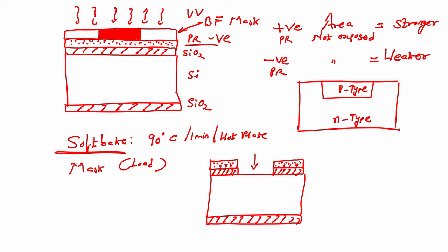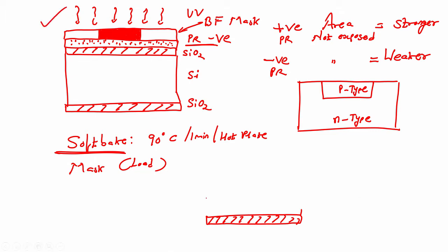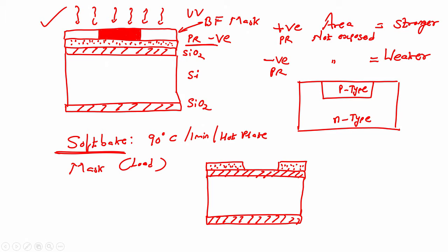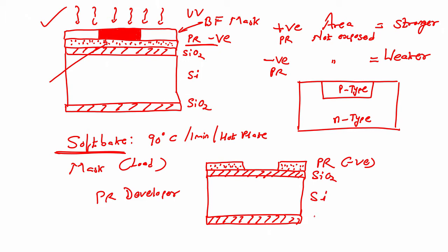After UV exposure we will develop the photoresist. With a bright field mask and negative photoresist, after UV exposure the photoresist which was not exposed got weaker and got developed in the photoresist developer. The photoresist below the clear area was not exposed, so it got weaker and was developed.